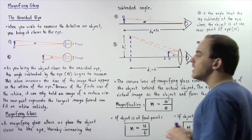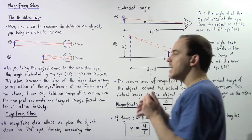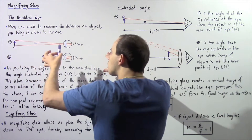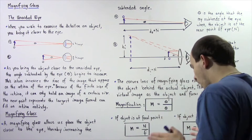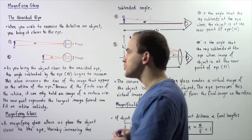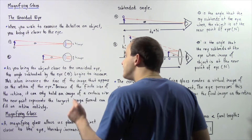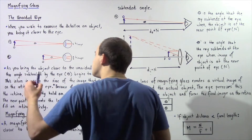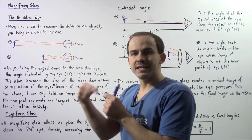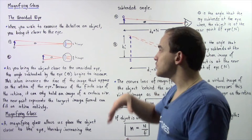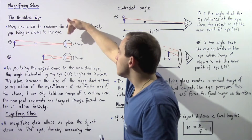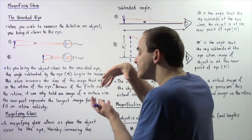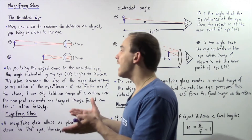To answer this question, let's look at diagram A and compare it to diagram B. In diagram A, our marker is found some far distance away. In diagram B, we move the marker closer to our unaided eye. Notice that the angle subtended by the eye, given by theta, increases as we move the object from a far distance to a nearby distance. This increase in the subtended angle increases the height or size of the image formed on the retina of the eye, found in the back of the eyeball.